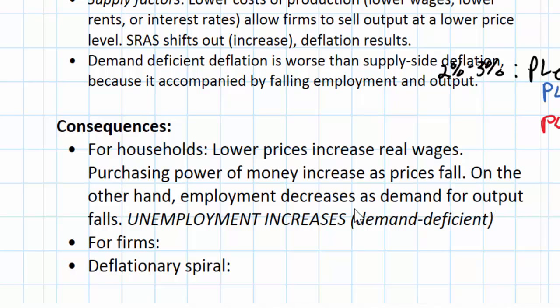As wages adjust, firms will hire workers back and employment will increase again. But in the short run, if deflation is caused by falling aggregate demand, this could harm households who will see employment opportunities decrease as firms lay off workers to adjust to the falling prices.